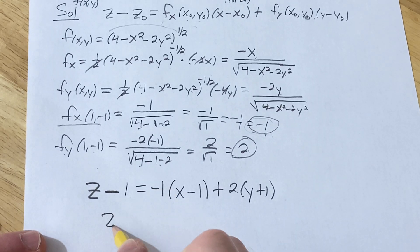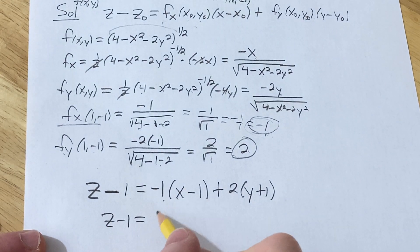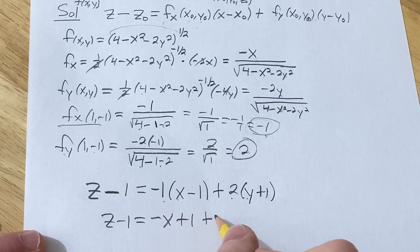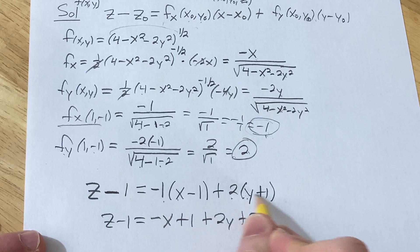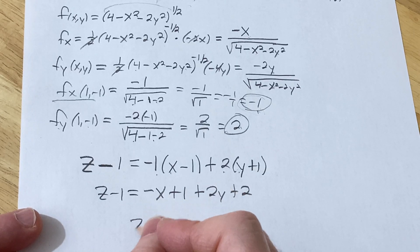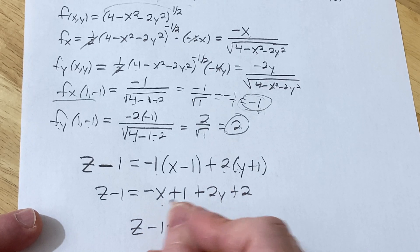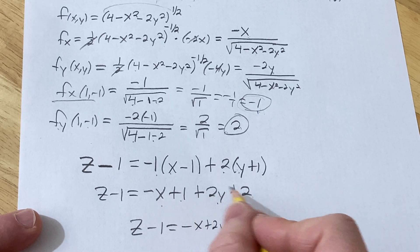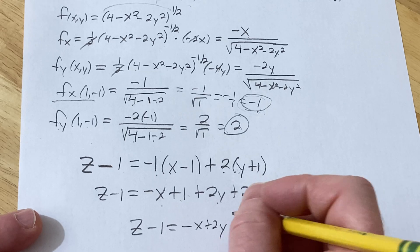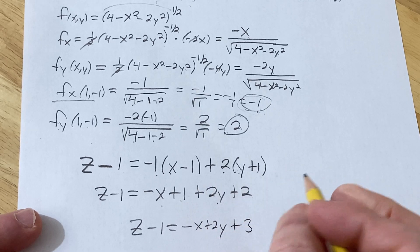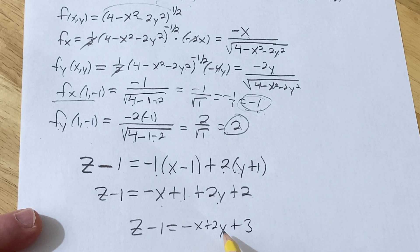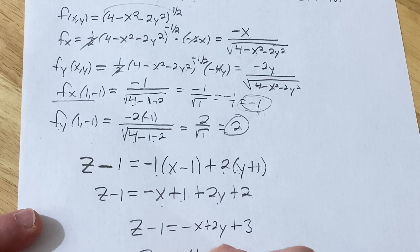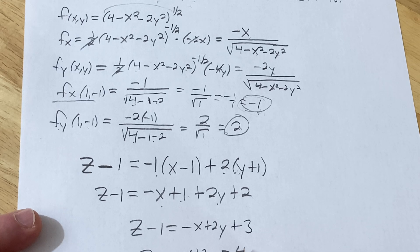Okay, so then just clean it up. z - 1 equals, distribute here, so we get -x + 1, plus 2y, plus 2, distributing. So you get z - 1 equals -x + 2y, looks like plus 3, right, so 1 plus 2 is 3. And we can, let's add the 1 over, so we get this, so that's pretty good.